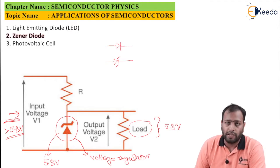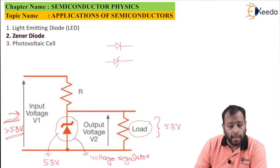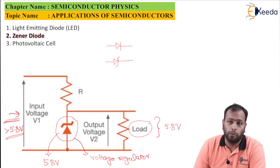So make sure whenever examiner asks you to draw a zener diode, always make this tilted ends on the cathode side, and whenever if he asks you to put the zener diode, always make sure you put it in the reverse biased mode.